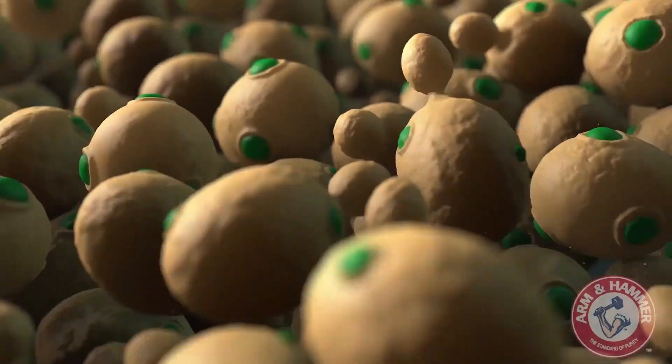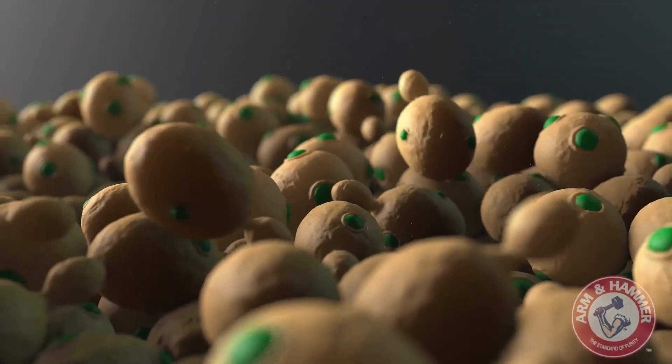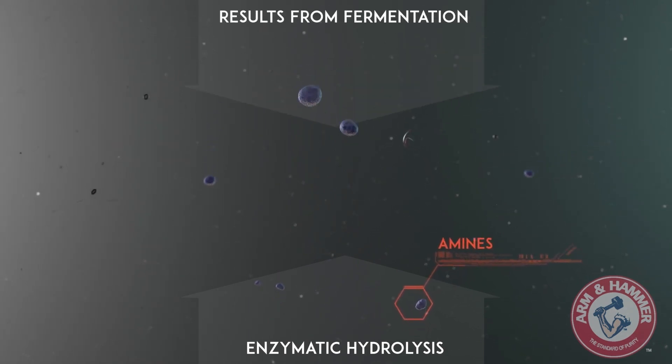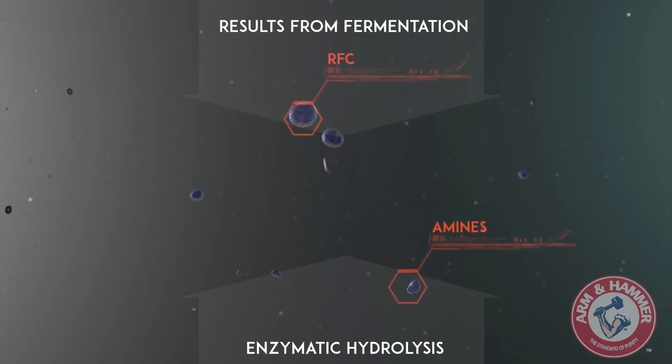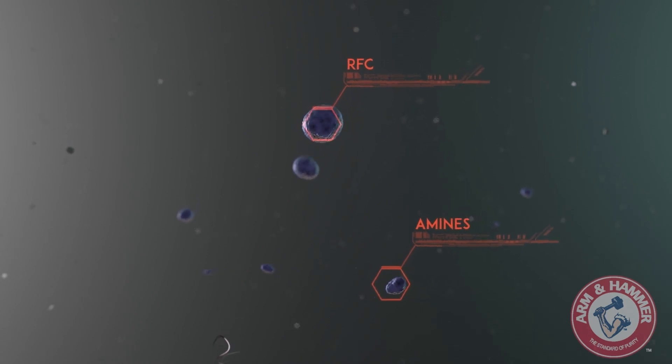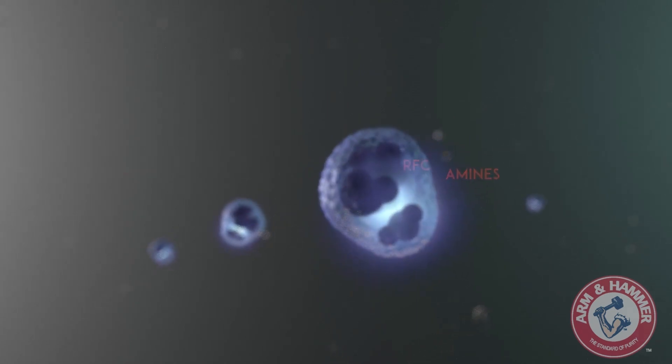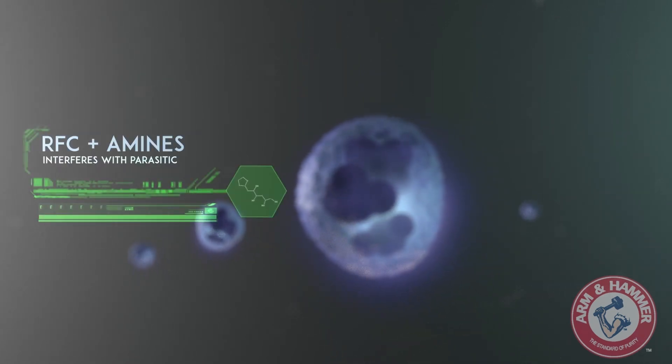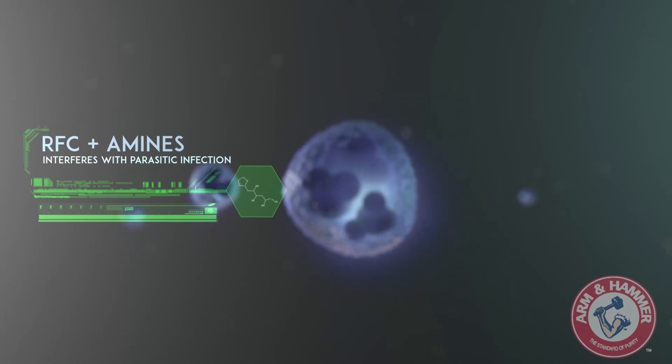This now completes the enzymatic process, but there is a final step which utilizes residual organic compounds called amines to synthesize yet another compound. The end product of hydrolysis is combined with the end product of fermentation. This introduces the residual amines to refined functional carbohydrates synthesized during fermentation. These readily bind to each other to form a compound which appears to interfere with various parasites, including Cryptosporidium and Eimeria, commonly known as coccidia—leading causes of gastrointestinal disorders in livestock and poultry.